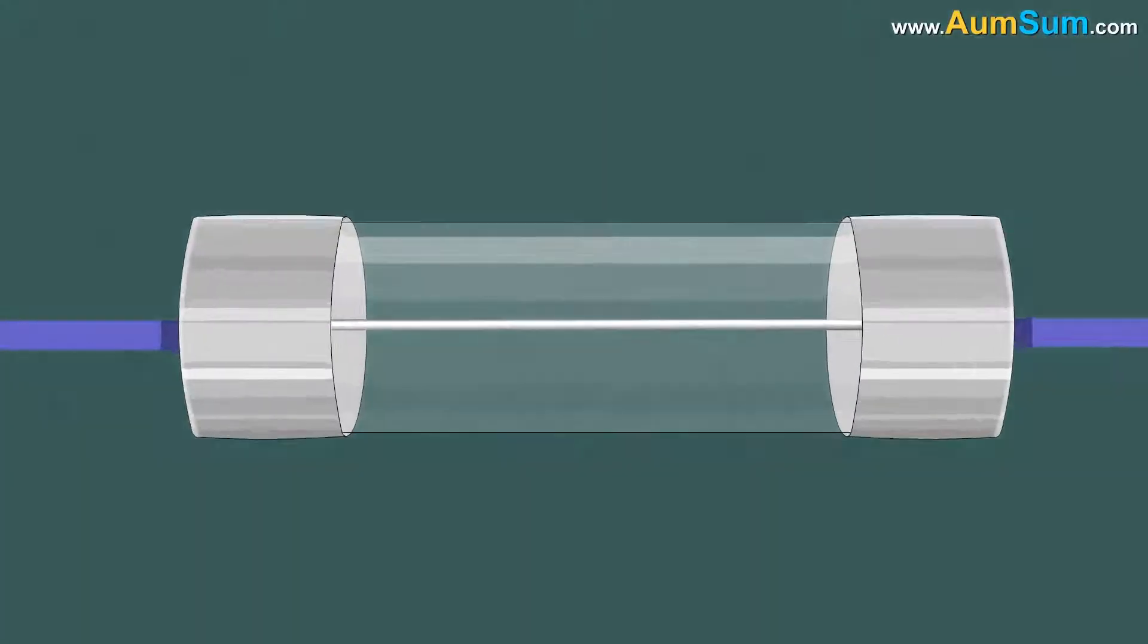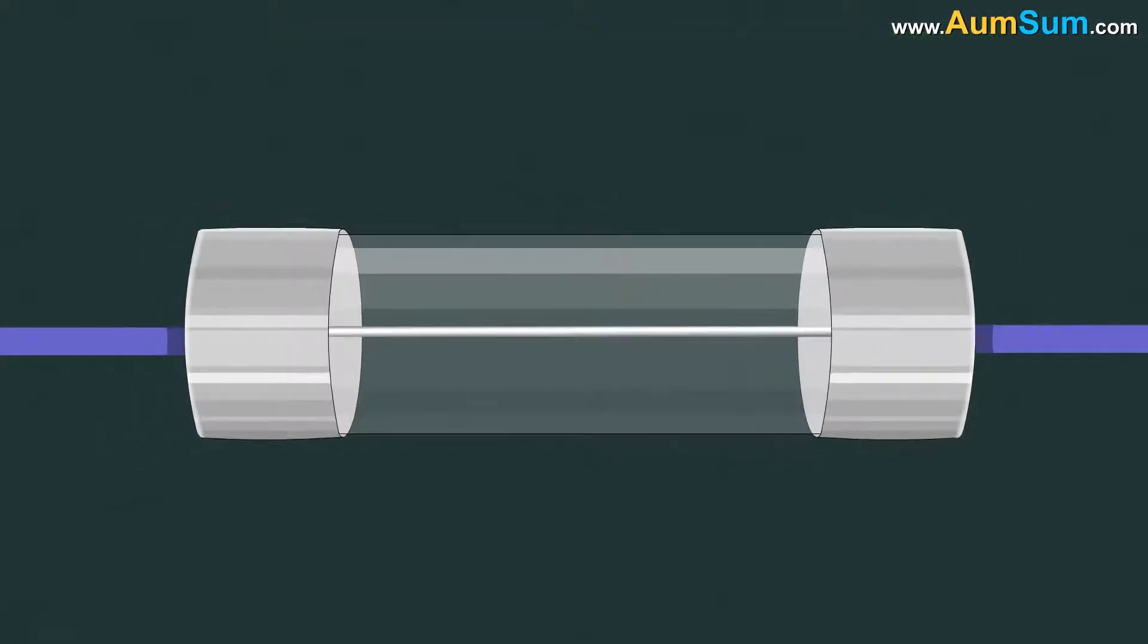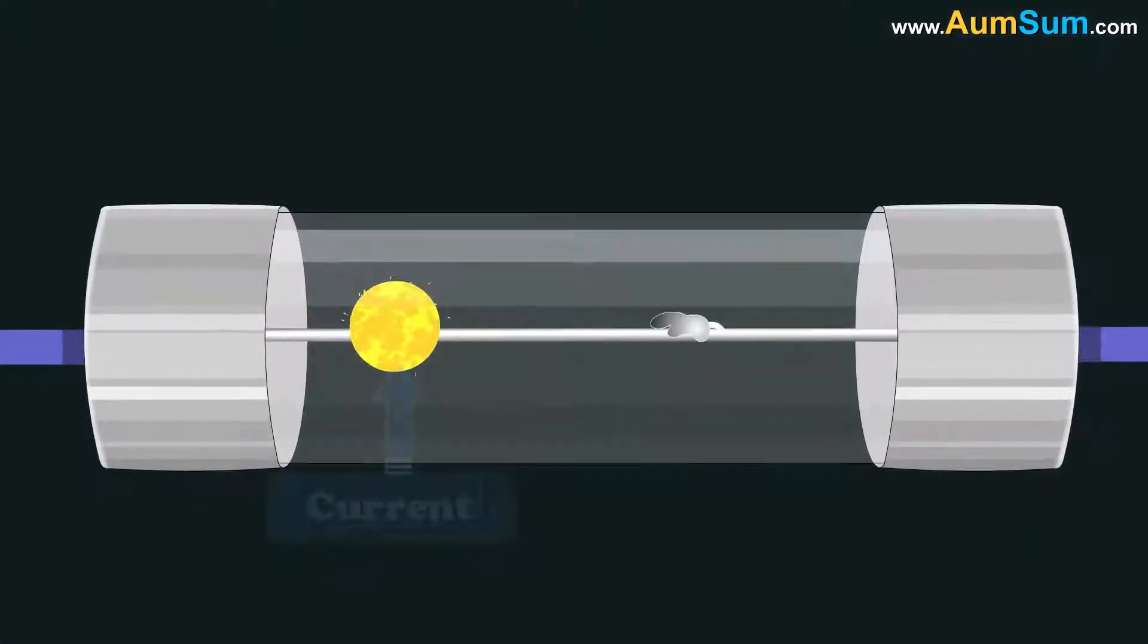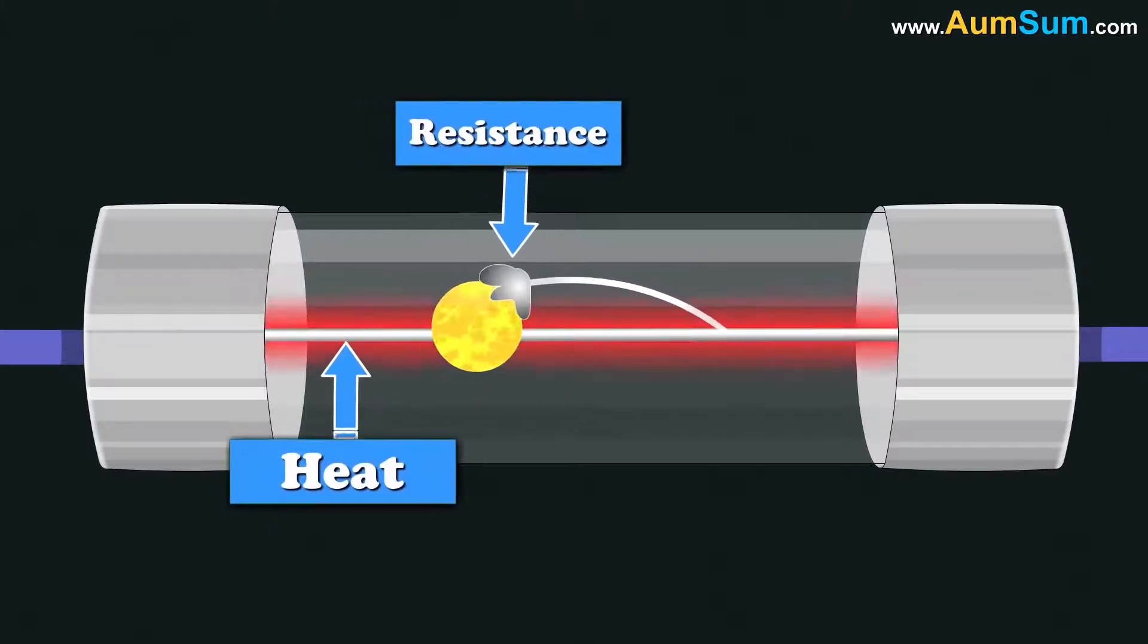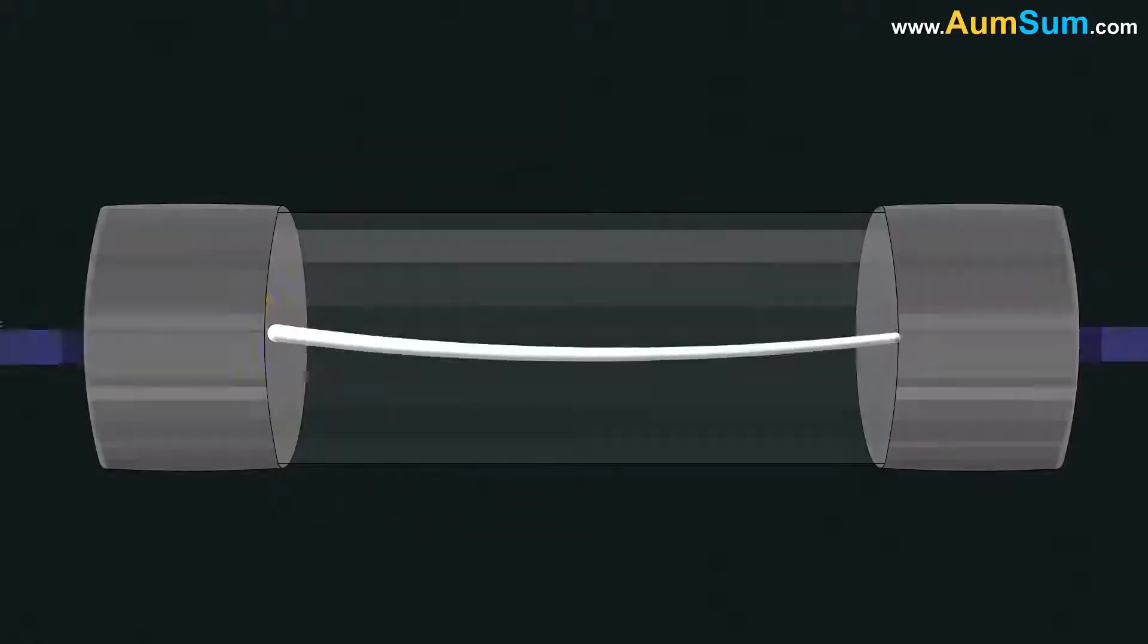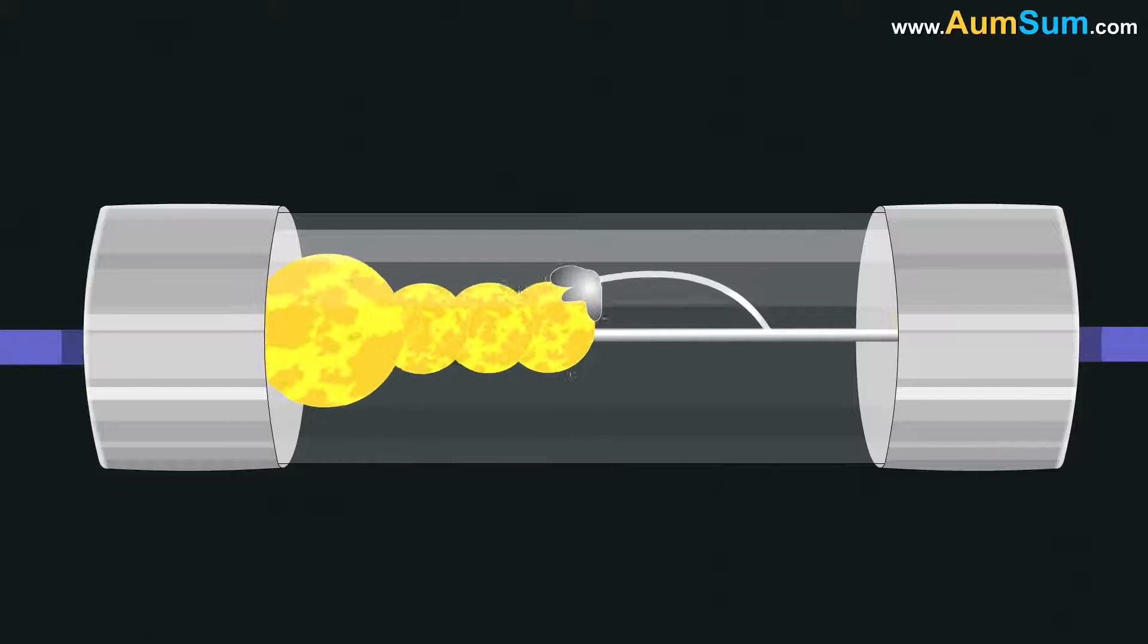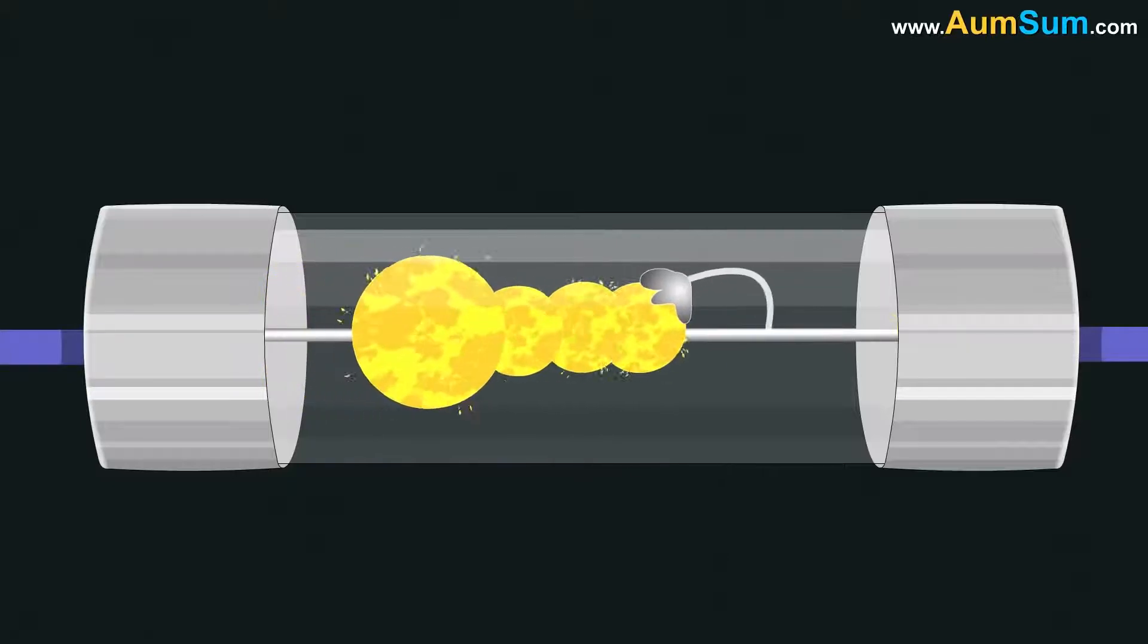A fuse consists of a metal strip or a wire fuse element. When current starts flowing through the fuse element, heat is generated due to resistance of the fuse element. The fuse element is constructed in such a fashion that when normal current flows or a small current spike occurs, it does not cause the fuse element to attain a high temperature.